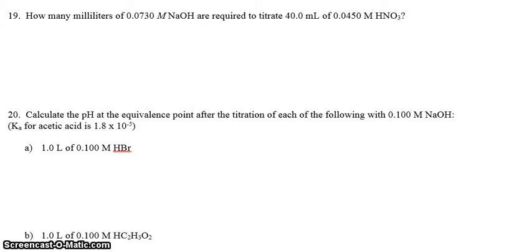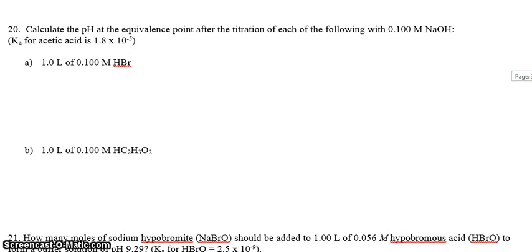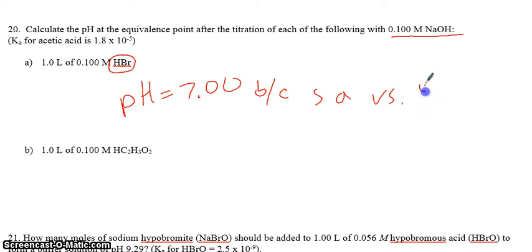20 says calculate the pH at the equivalence point of different solutions. Now, the first solution is actually a strong acid solution. Know your seven strong acids. Since this is a strong acid, and we're putting a strong base against it, at the equivalence point, you'll have a pH of 7. No calculations necessary. You can explain it. I would explain, you say, because strong acid versus strong base. That should do it.